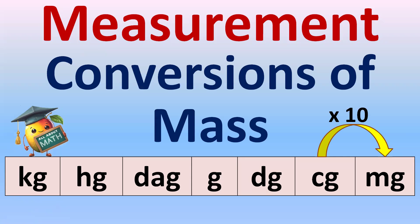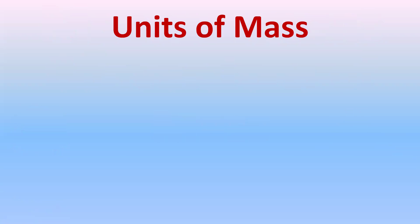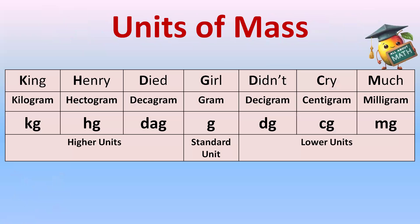Conversions of mass. In units of mass we have high units: kilogram, hectogram, decagram, and the standard unit gram, and the lower units decigram, centigram, milligram. The highest unit is kilogram and the lowest unit is milligram. To remember this sequence we have the mnemonic: King Henry died, girl didn't cry much.